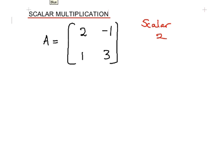So scalar multiplication of this matrix A would look as follows: 2A. To compute the scalar multiplication, we simply multiply each element of A by the scalar. So in this case, we have 2 times 2, which is 4; minus 1 times 2, which is minus 2; plus 1 times 2, that is 2; and 3 times 2, that gives us 6.